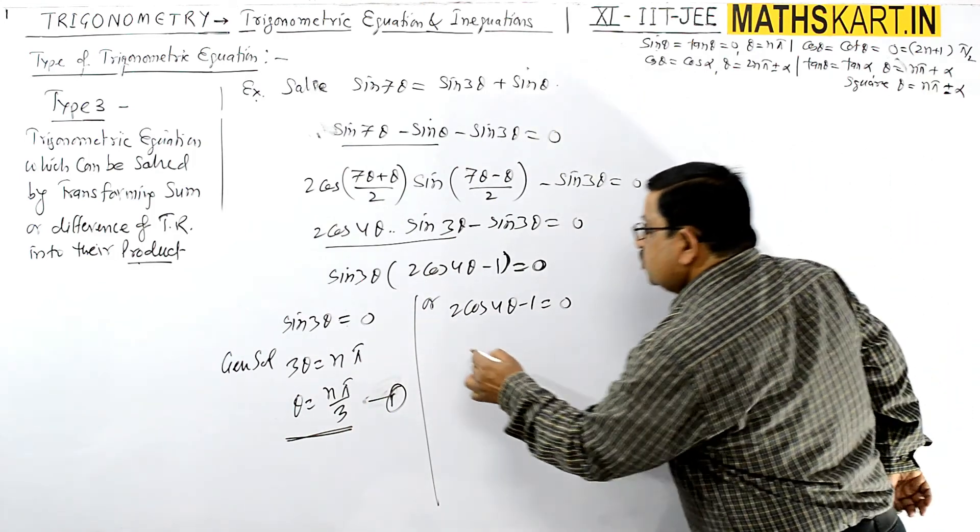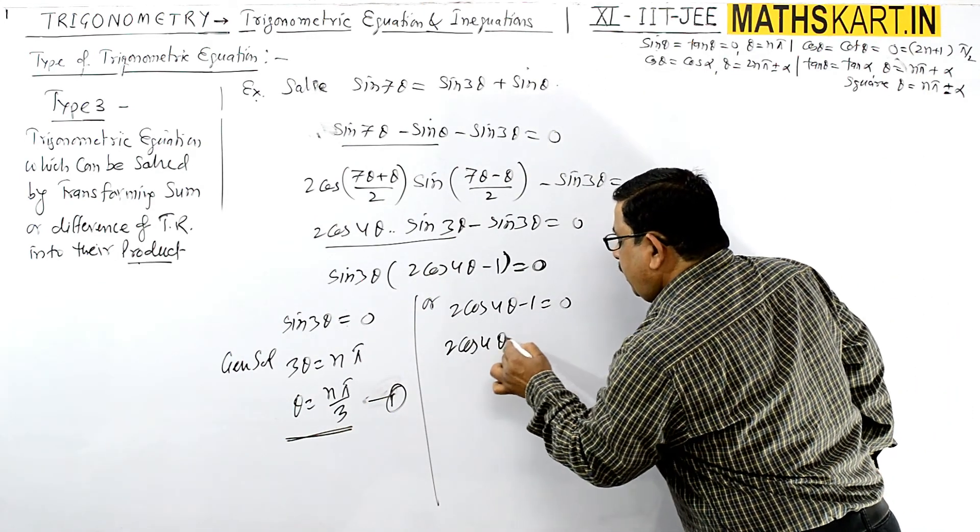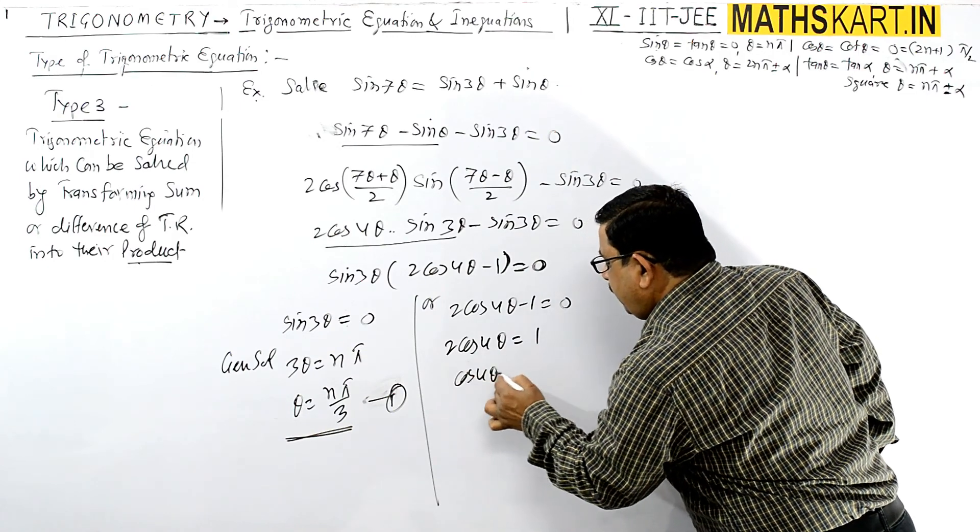Now let's solve the second factor. This is 2 cos 4θ = 1, so cos 4θ = 1/2.